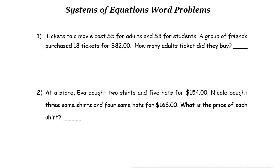Let's take a look at these two examples. The first example: tickets to a movie cost $5 for adults and $3 for students. A group of friends purchased 18 tickets for $82. How many adults tickets did they buy? So here we're looking for two values that are missing. We can say one of them is X, the other one is Y. X is the number of adults, and Y is the number of students that we don't know.